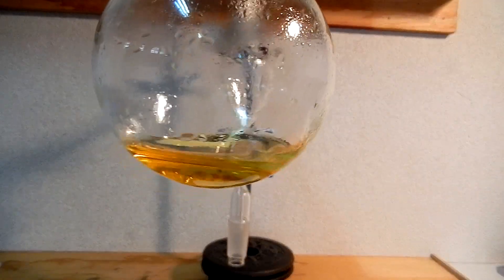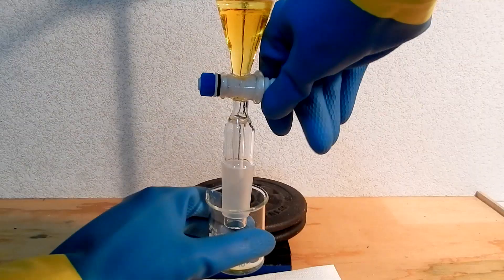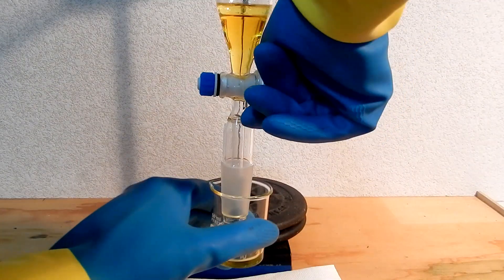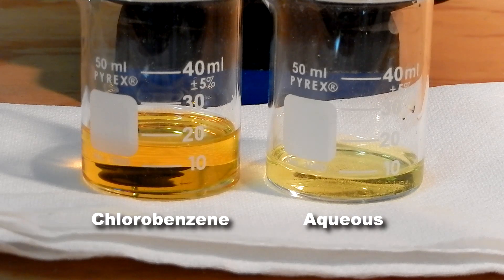The distillate was given time to form two layers. Then it was transferred to a separatory funnel and the layers were separated. Discard the upper aqueous layer and keep the lower chlorobenzene layer.